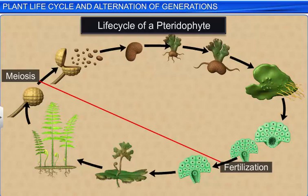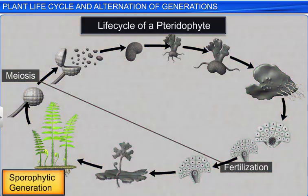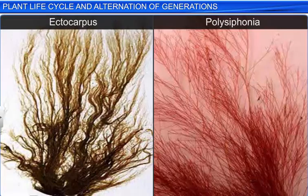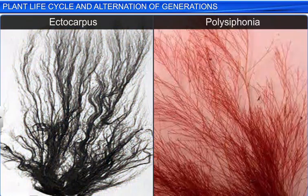In pteridophytes, the photosynthetic sporophyte with vascular tissues is the dominant phase, that alternates with the haploid, independent, multicellular, saprophytic or autotrophic gametophyte. Apart from bryophytes and pteridophytes, certain algae such as Ectocarpus and Polysiphonia also exhibit the haplodiplontic life cycle.